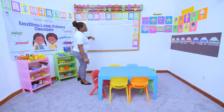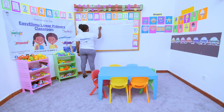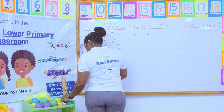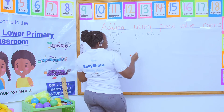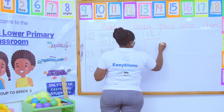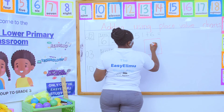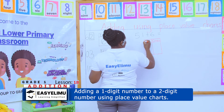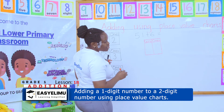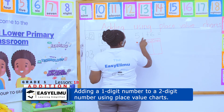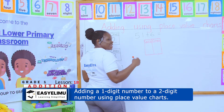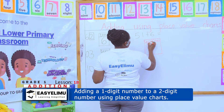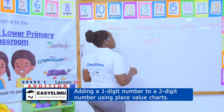What if I've been told to add using the place value chart — for example, 51 plus 6? I will draw my place value chart, divide it into two columns: ones on the right and tens on the left. For 51, the number on the right hand is one and the number on the left hand is five.